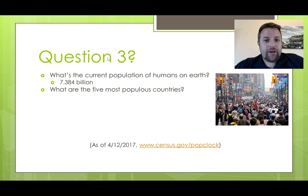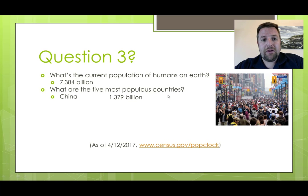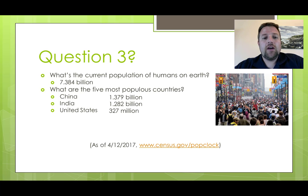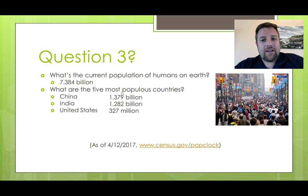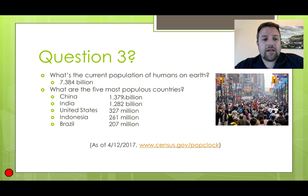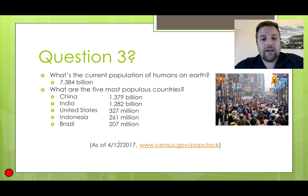Let's call this question three and a half: what are the five most populous countries in the world? Number one, China, 1.4 billion. India, 1.3 billion. Third, our home — the United States, 327 million. Those other two countries are more than four times more populous than the United States. Indonesia, 261 million. Brazil, about 207 million people. Again, these are as of two days ago.